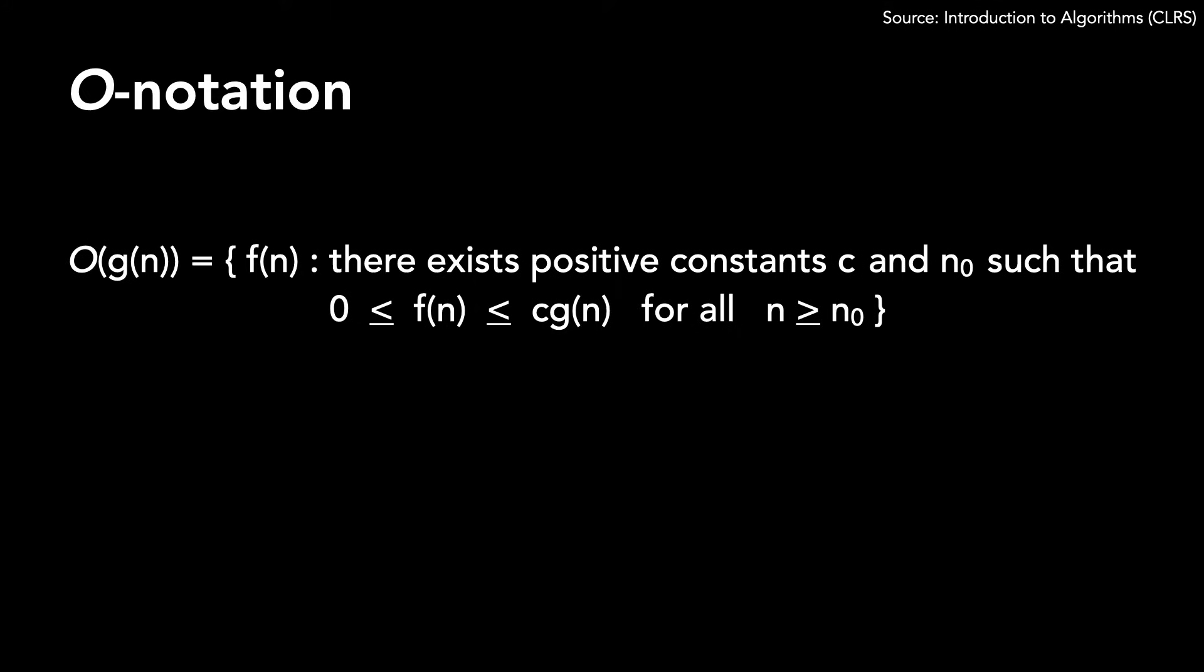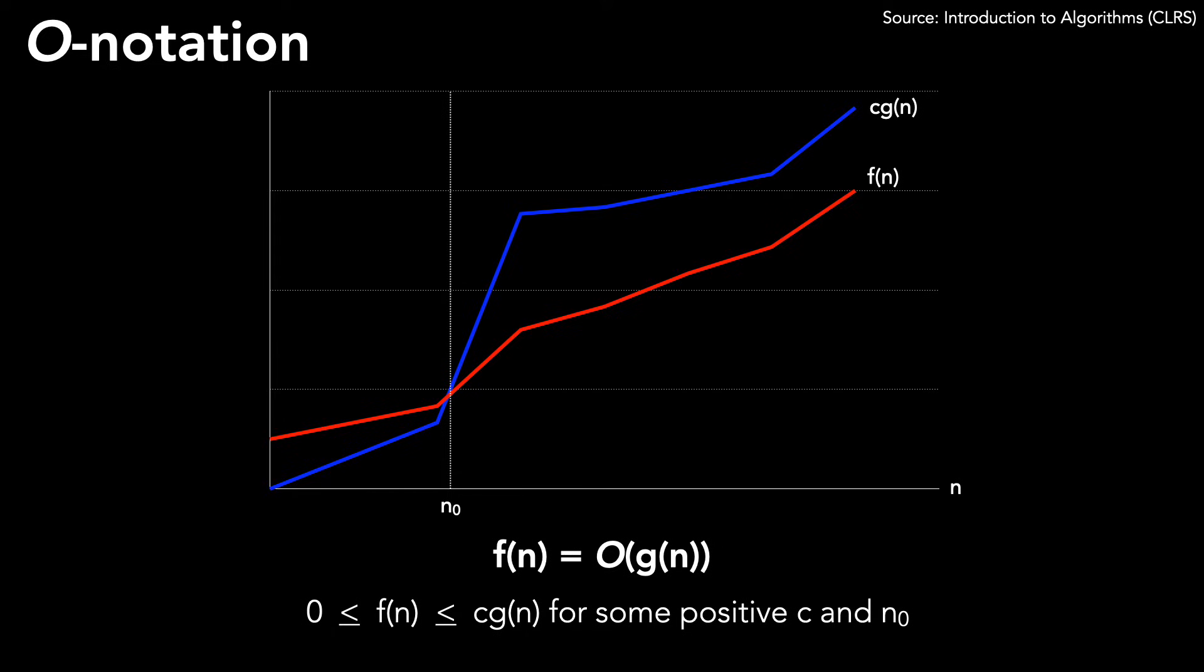Again, when we're analyzing algorithms, n is our input size. Big O implies that f(n) is asymptotically upper bound by g(n). This is what O notation looks like graphically.